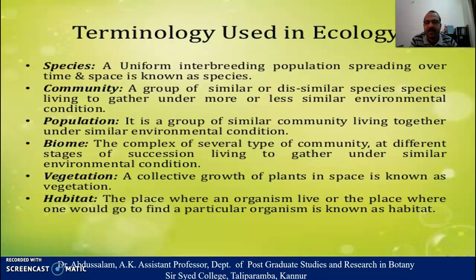What is a population? It is a group of similar organisms living together under a similar environmental condition — for example, human population. Then what is a biome? The complex of several types of community at different stages of succession living together under similar environmental conditions is called a biome.